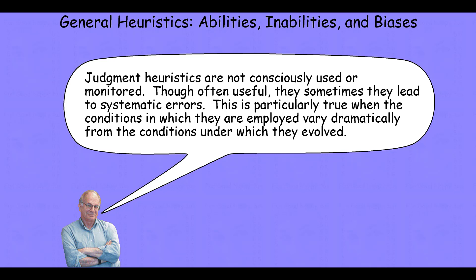Because these judgment heuristics are part of System 1, they're not consciously used and not consciously monitored. And because they're heuristics, they're often useful, but they sometimes lead to systematic errors. What we'll see is that these System 1 judgment heuristics lead to systematic and often undetected errors, particularly when the conditions in which they are employed vary dramatically from the conditions under which they evolved.